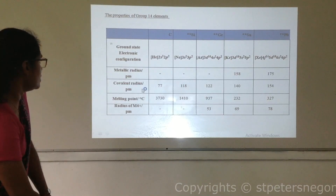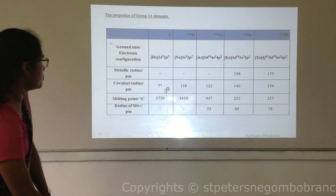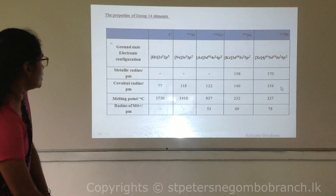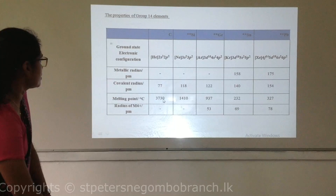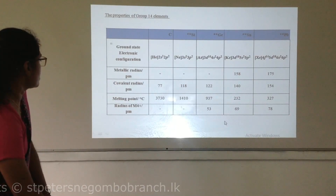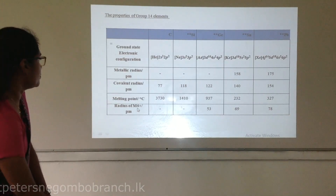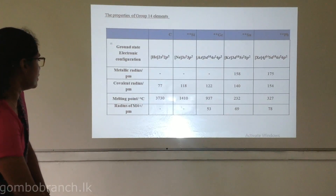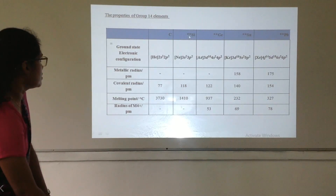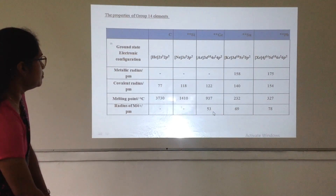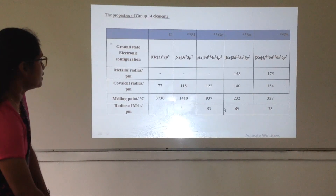The covalent radius also increases from top to bottom. Melting point decreases from top to bottom. Regarding the M4+ ion radius: carbon and silicon do not form the M4+ ion, so they don't have that radius. However, germanium, tin, and lead do form the M4+ ion.